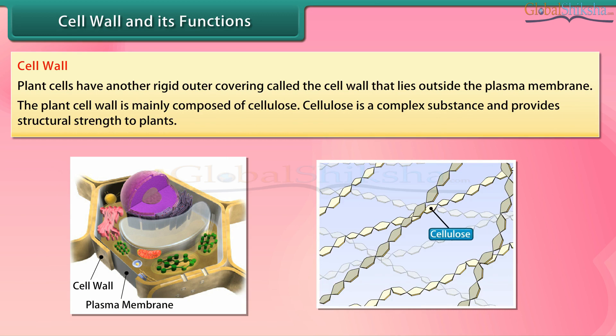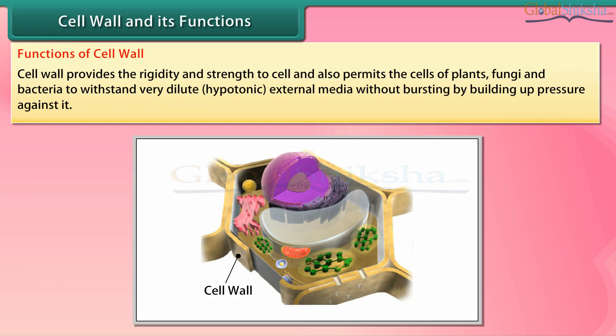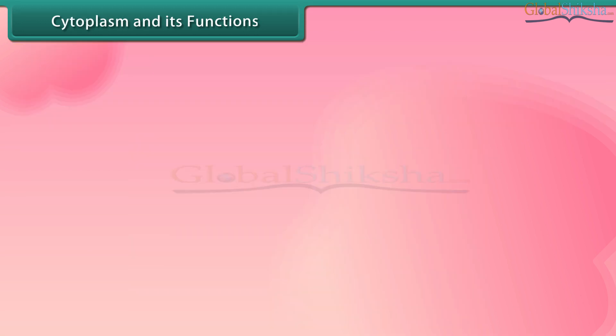Cell wall: Plant cells have another rigid outer covering called the cell wall that lies outside the plasma membrane. The plant cell wall is mainly composed of cellulose, which is a complex substance and provides structural strength to plants. The cell wall provides rigidity and strength to the cell and also permits the cells of plants, fungi, and bacteria to withstand very dilute hypotonic external media without bursting.